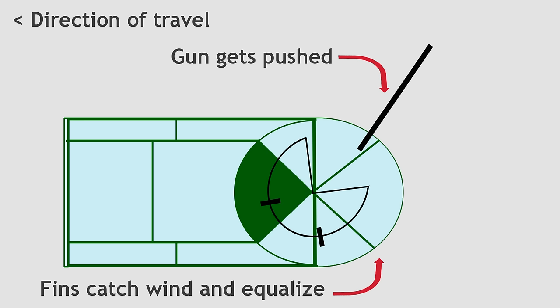The gun gets pushed towards the center as it's pointing outside, but because of these vanes, the turret itself gets pushed the other way.